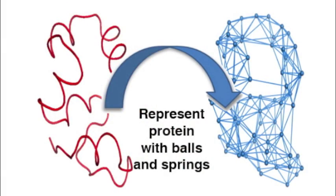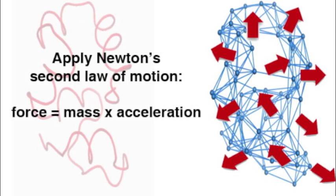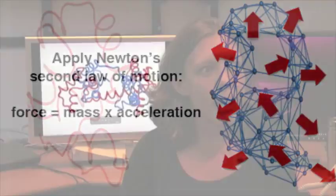You represent a protein as a series of balls with springs in between them, and then essentially you use Newton's equations of motion to calculate the overall global motion of a protein. I'm interested in these global motions because those are the large-scale motions that describe these conformational changes.